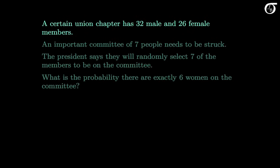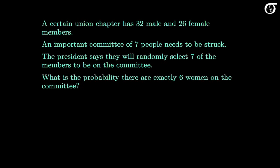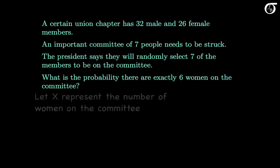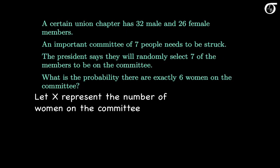A certain union chapter has 32 male and 26 female members, for 58 members in total. An important committee of 7 people needs to be struck, and the president of the union says they will randomly select 7 of the members. What is the probability there are exactly 6 women on the committee? Let the random variable x represent the number of women selected, and we want the probability that x equals 6.